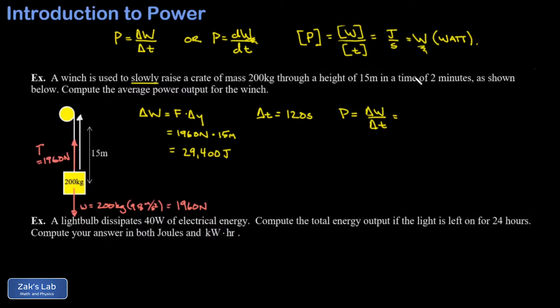We have everything we need to compute the power output of this winch. It did a work of 29,400 joules in a time of 120 seconds, and this comes out to 245 watts.